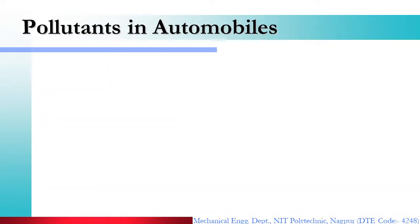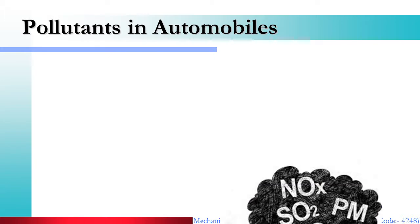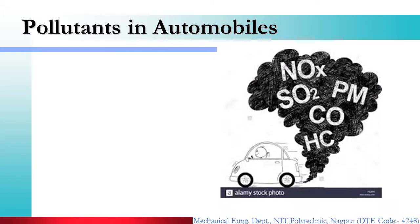So let's learn about pollutants in automobiles. Exhaust is the main source, and we have seen that 60–70% of exhaust emission comes from the tailpipe.